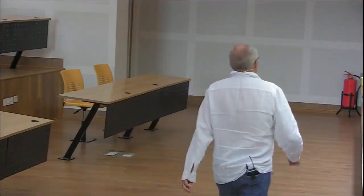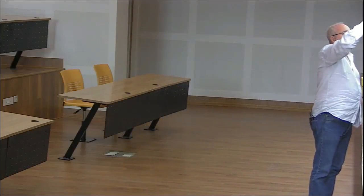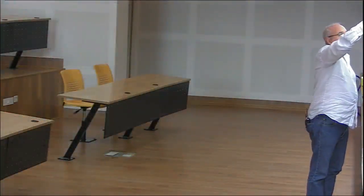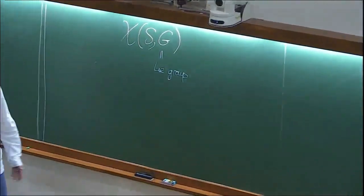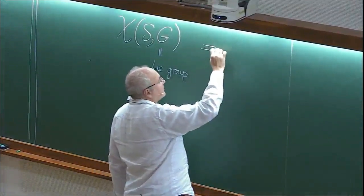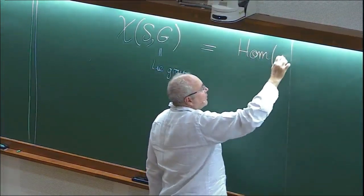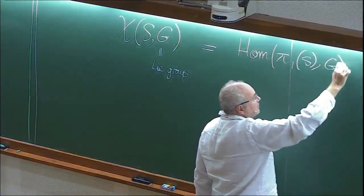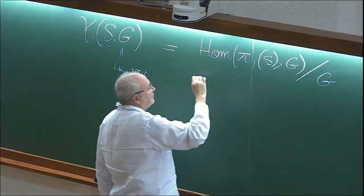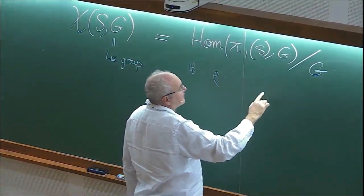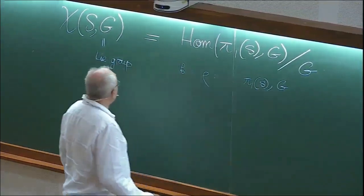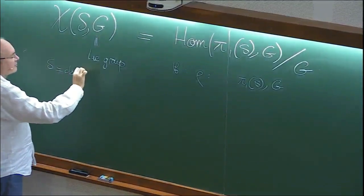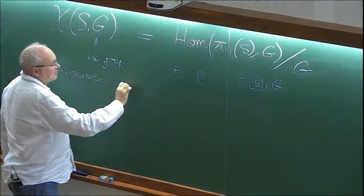Some basic algebraic geometry for curves. In my talk, I'm going to be interested in the following object: K(S,G), where G is a Lie group. I'm going to care only about semi-simple Lie groups. This is a space of homomorphisms from π₁(S) into G, divided by G, where S is a closed compact connected surface of genus greater than 2.